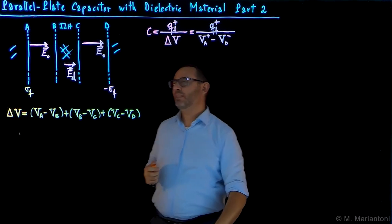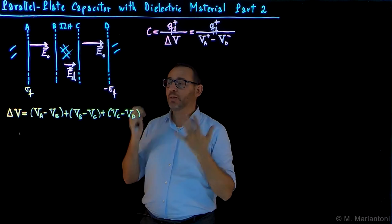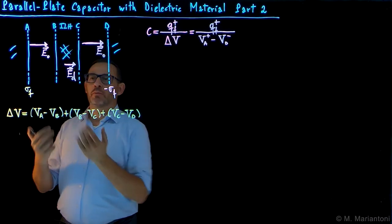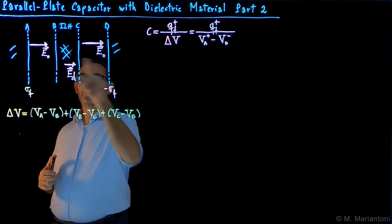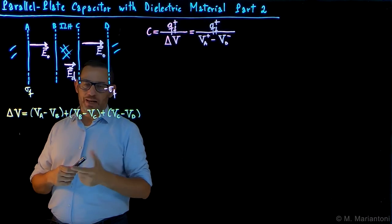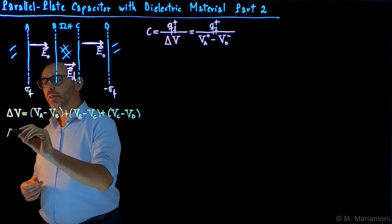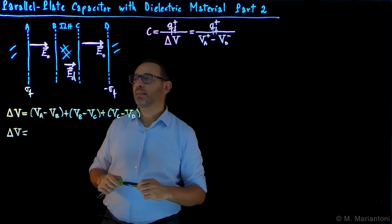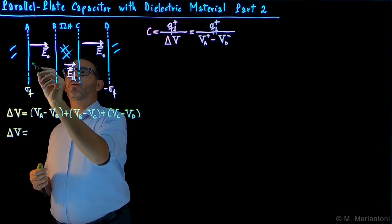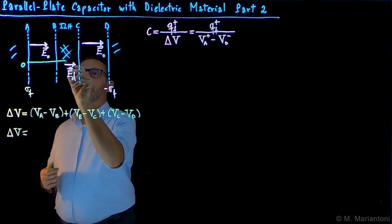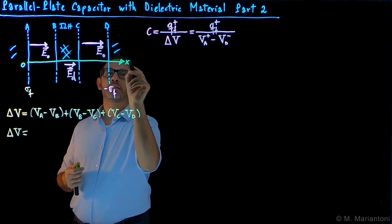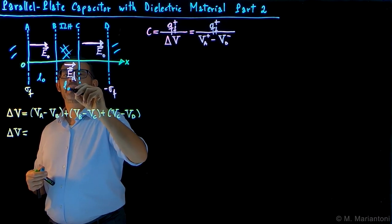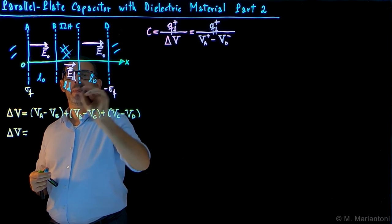Now that we know qualitatively what is happening inside the dielectric material, how do we compute the potential difference? We use the definition of work — the work done to move a unit particle. Delta V can be rewritten with respect to the Cartesian coordinate system chosen in the previous video. The origin is at one end, with the X axis running through the capacitor. The length of the first vacuum region is L_0, the dielectric region has length L_D, and the second vacuum region has length L_0 again.